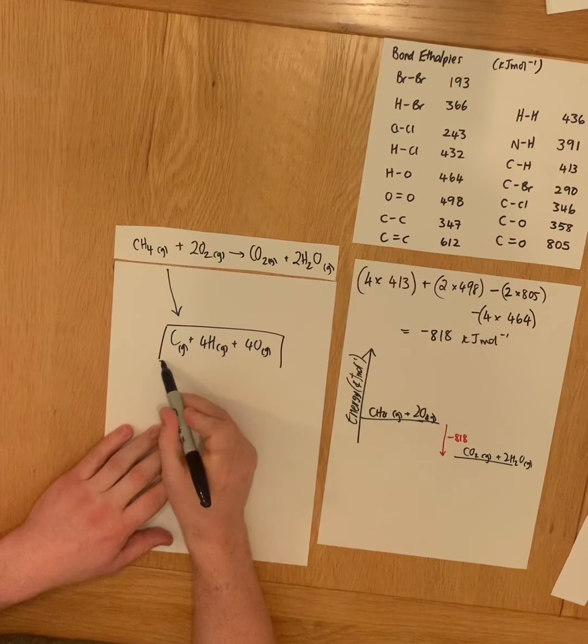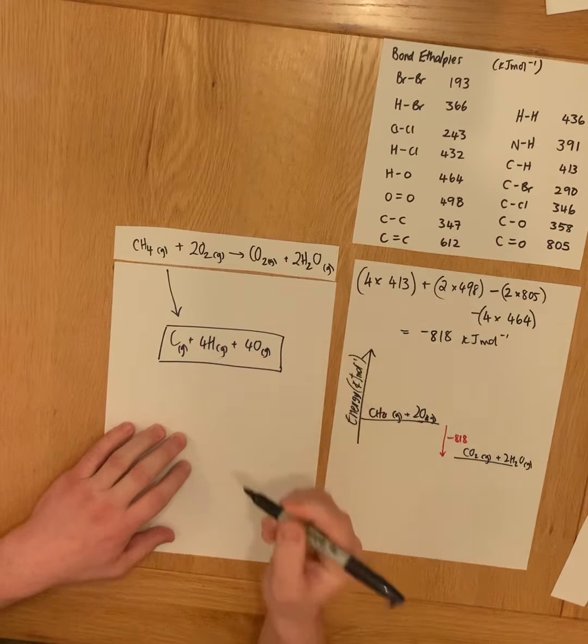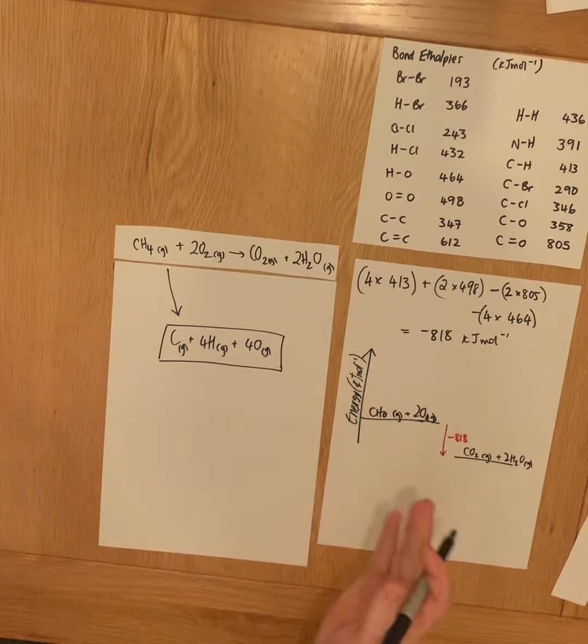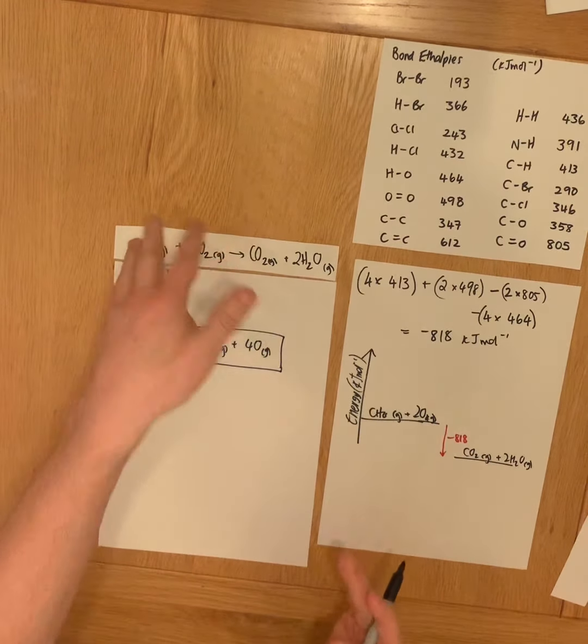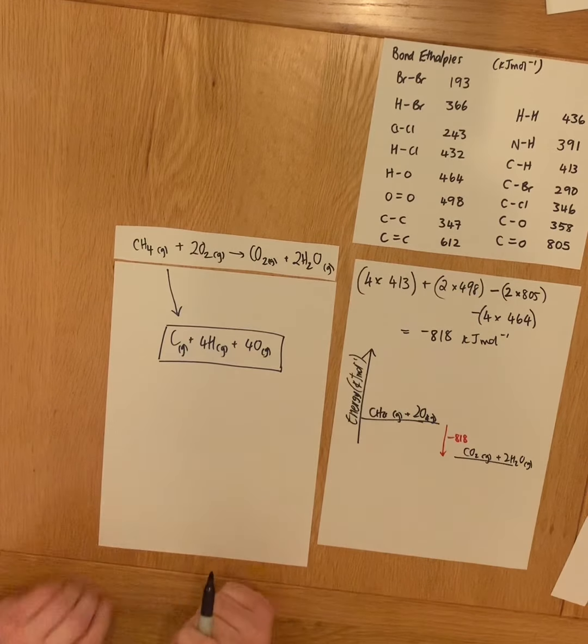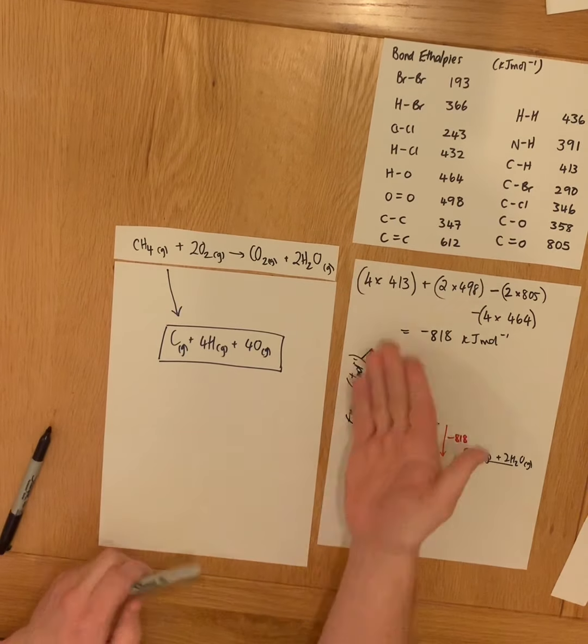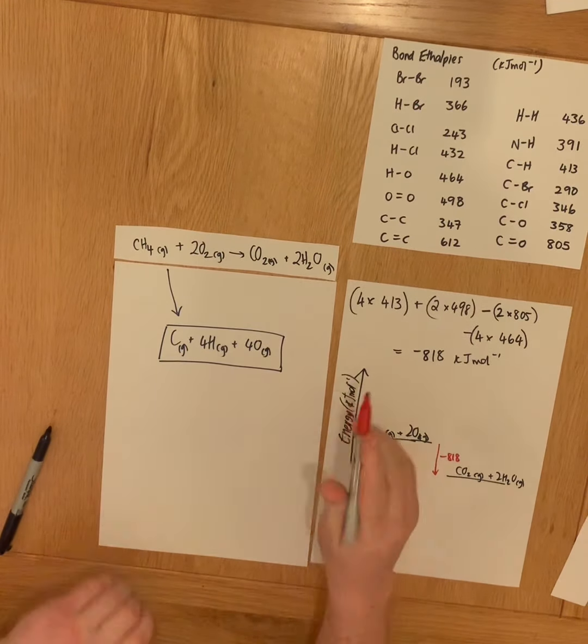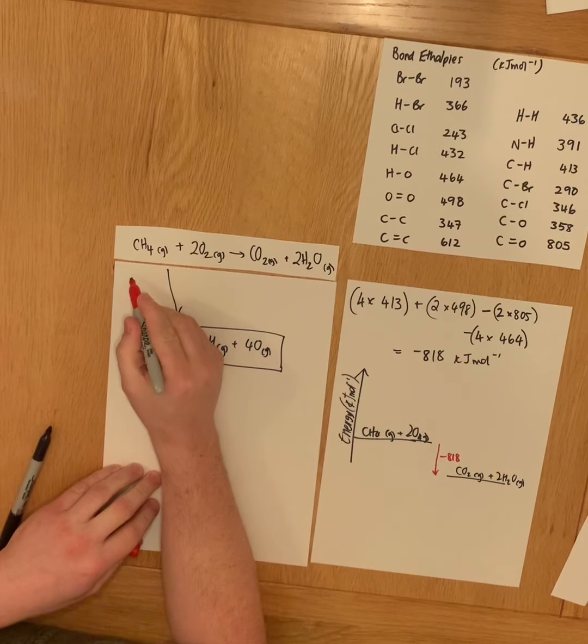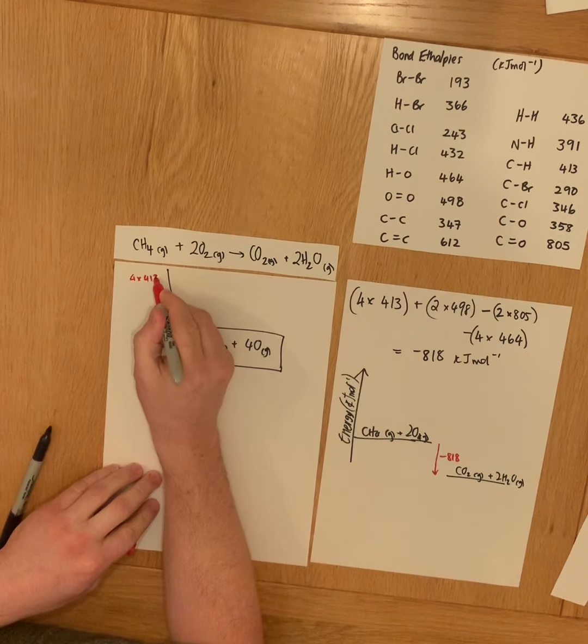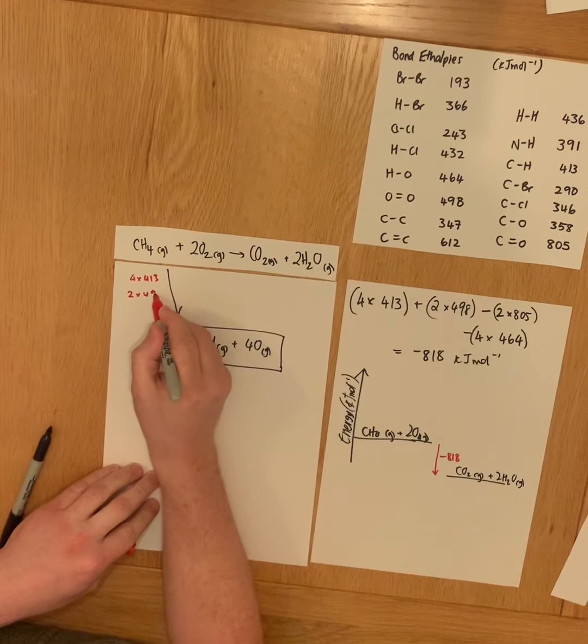Looks a bit strange seeing hydrogen and oxygen written as atoms, but in this case the definition is breaking the bonds in the reactants to form the atoms. And just like we have over here with the bond energies, that requires 4 lots of 413 and 2 lots of 498.